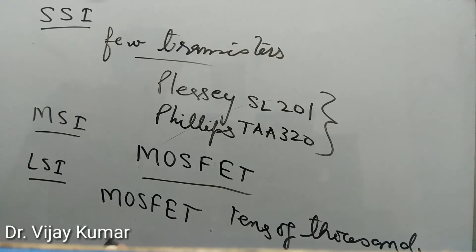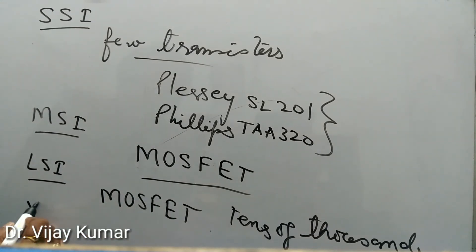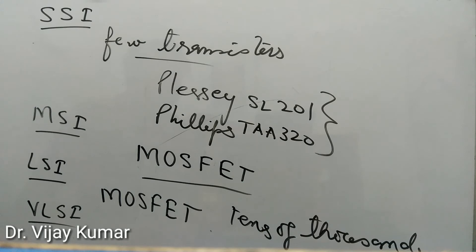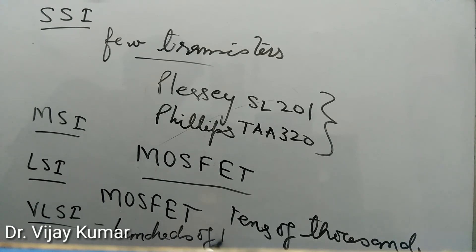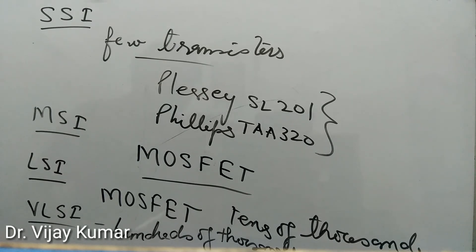After LSI, VLSI — Very Large Scale Integration — is used. As the final step in the development process, starting in the 1980s and continuing through the present, VLSI development began with hundreds of thousands of transistors in the early 1980s.